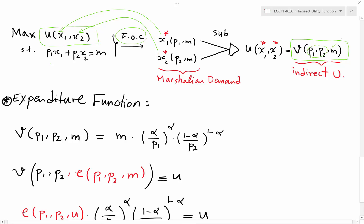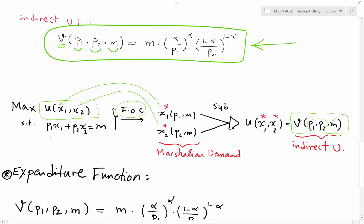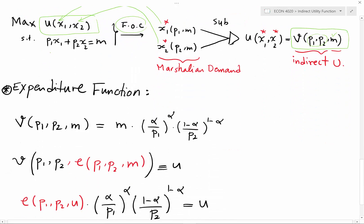In this video I'm going to explain how we can derive the expenditure function from a given indirect utility function. Assume we are given the indirect utility function that we derived in the previous video — this is my indirect utility function.